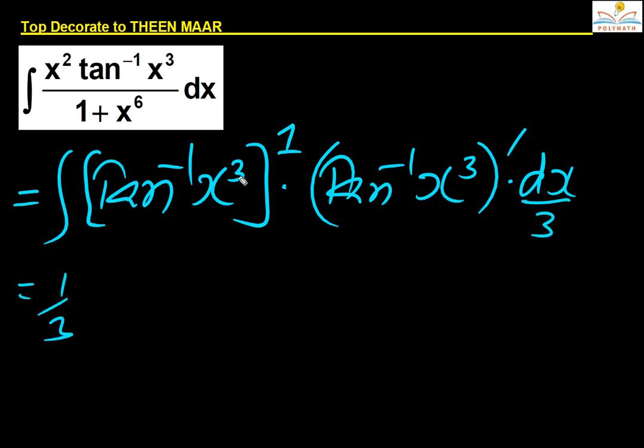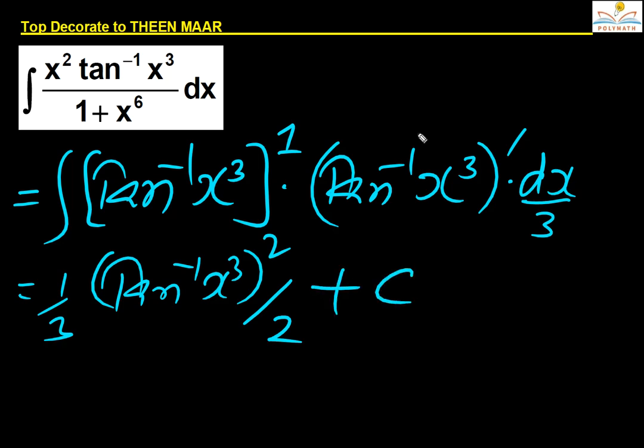So it is in the form of integral f(x) power n into f dash x, which is nothing but tan inverse x cubed whole power 1 plus 1, upon 1 plus 1, plus c.